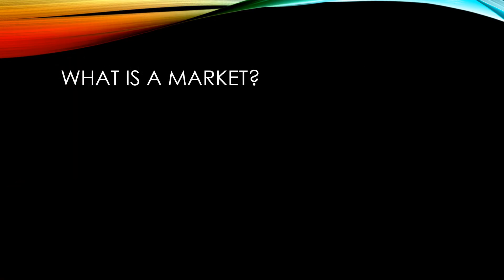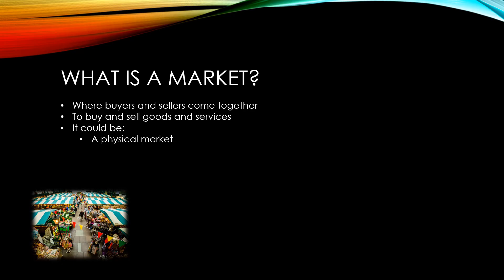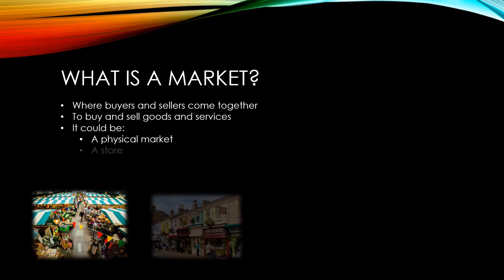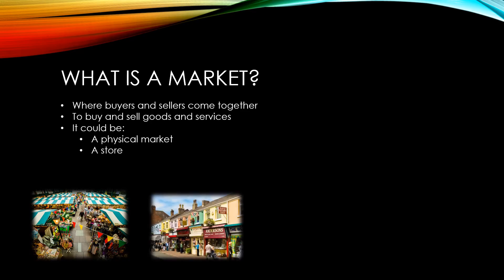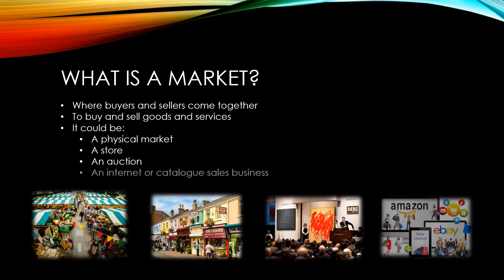To start with, let's consider what actually is a market. A market is a place where buyers and sellers come together to buy and sell goods and services. There are lots of different types of markets that we might find. A market could be a physical market like you might find in a town on a weekend or a particular day of the week. It might be more like a traditional store, it could be an auction, or it could be increasingly some sort of online sale.